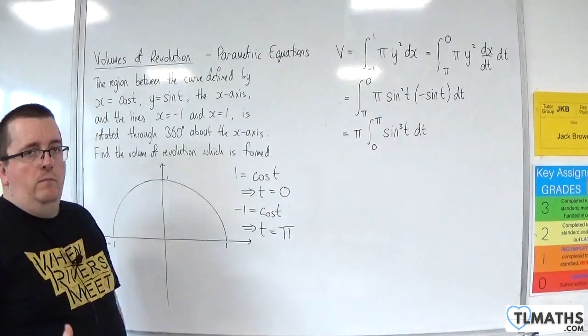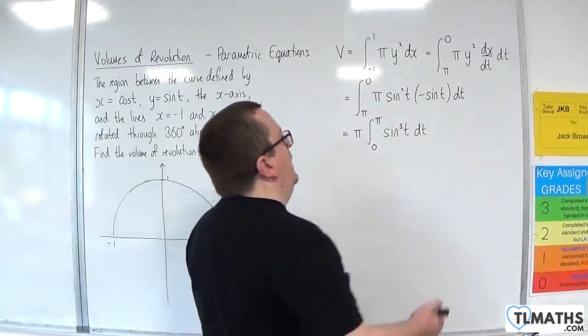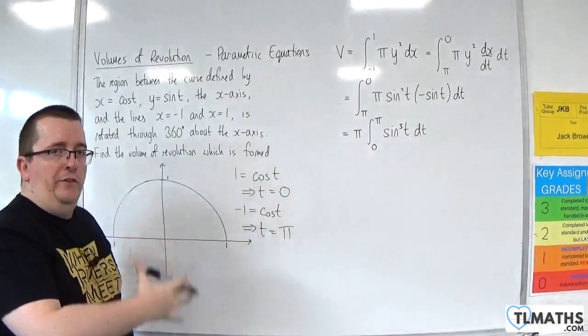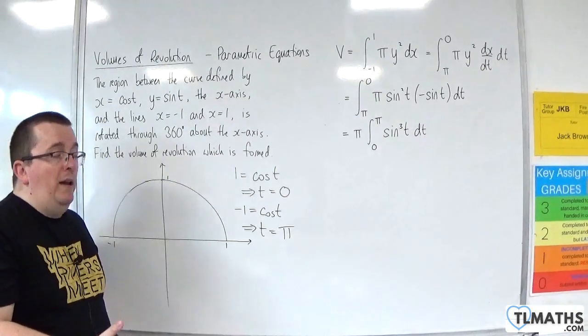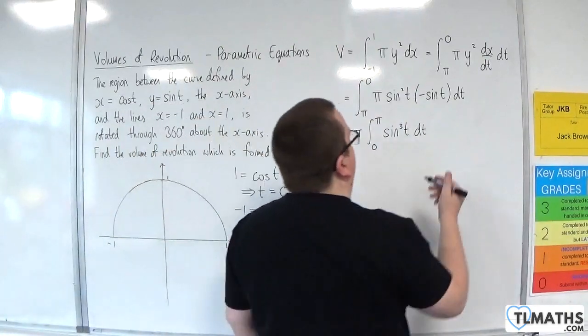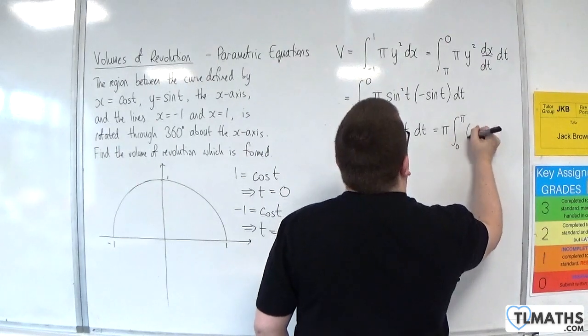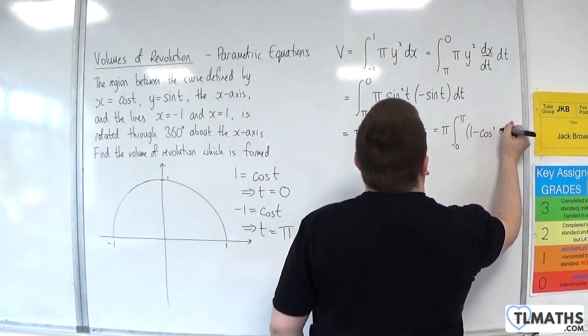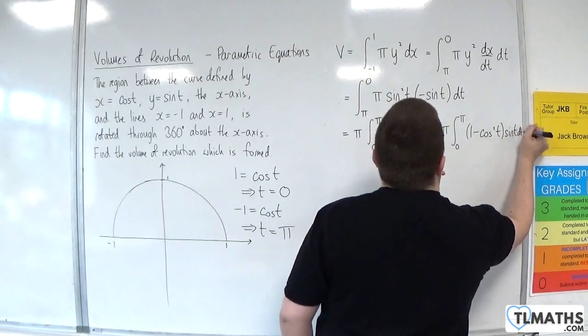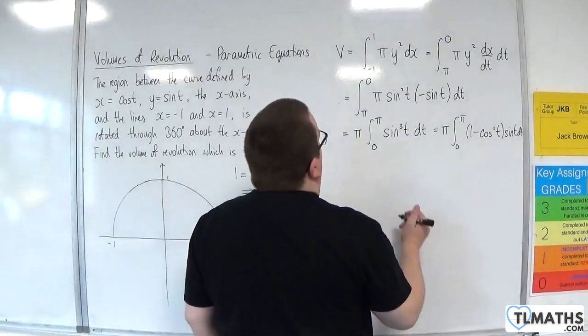So now how are we going to integrate sine cubed? Well, essentially, it's in this form that I really want to think about it, the sine squared times sine of t. Because I can replace the sine squared with 1 minus cosine squared.